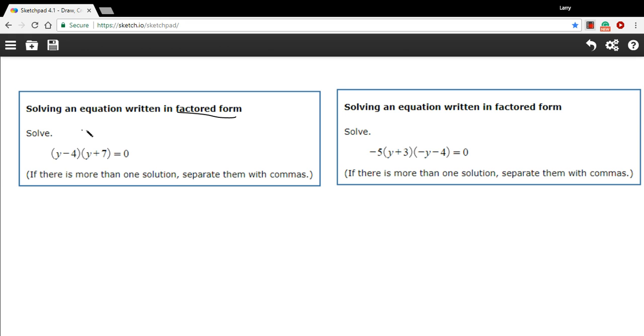The trick here is that when you multiply two things, like these two factors are being multiplied by each other, and they equal zero, that means one of these or both has to equal zero. So either y minus four equals zero, or y plus seven equals zero, or both of them do.